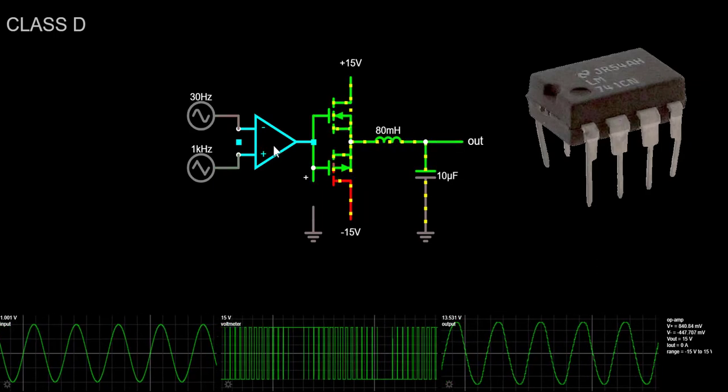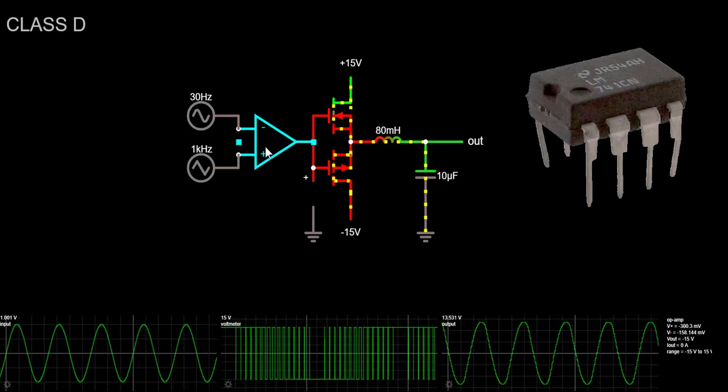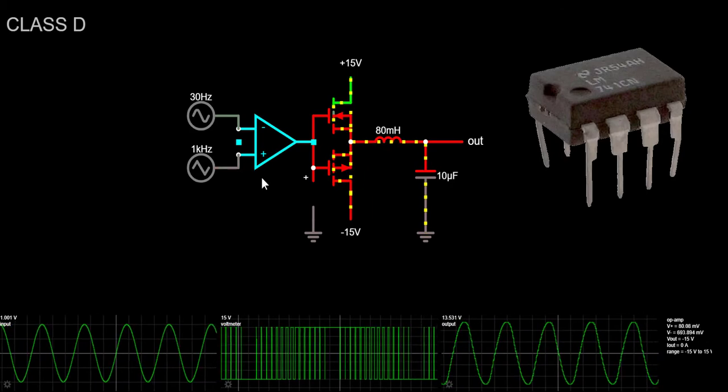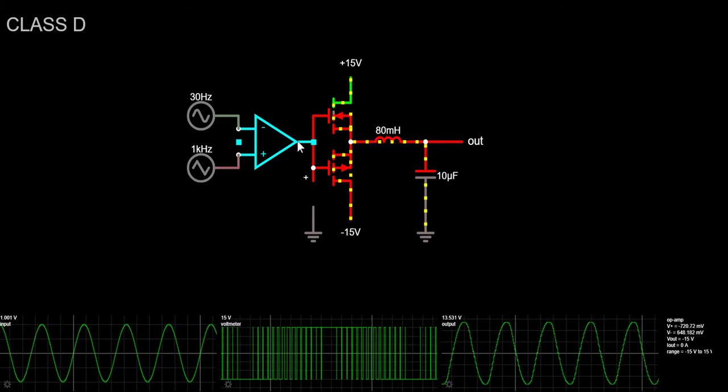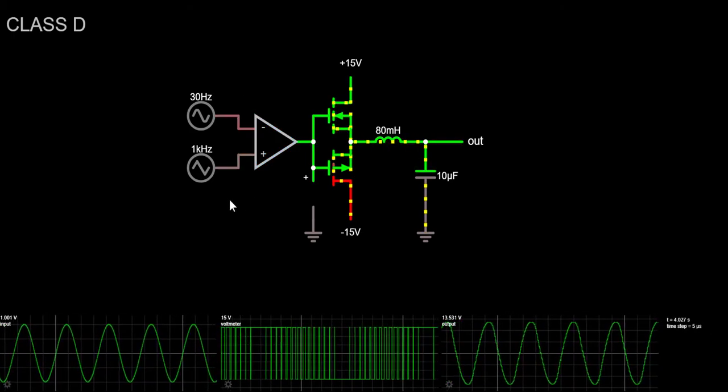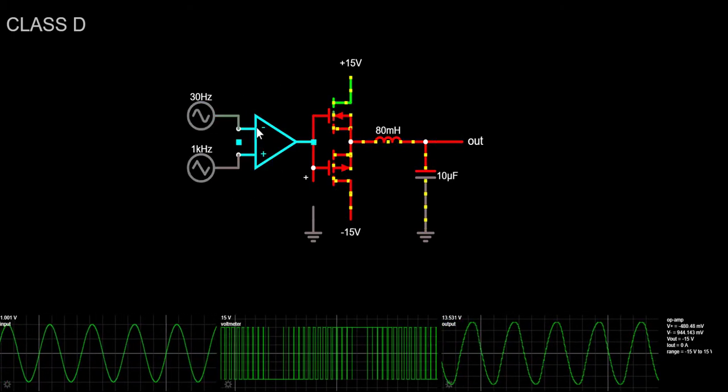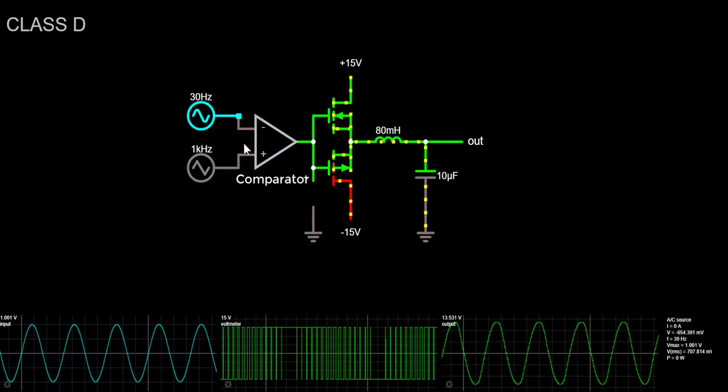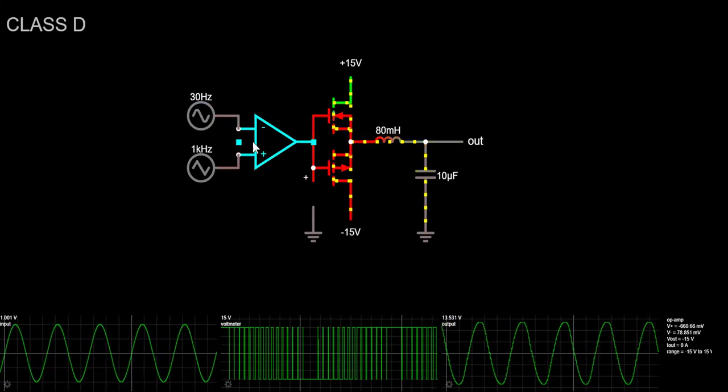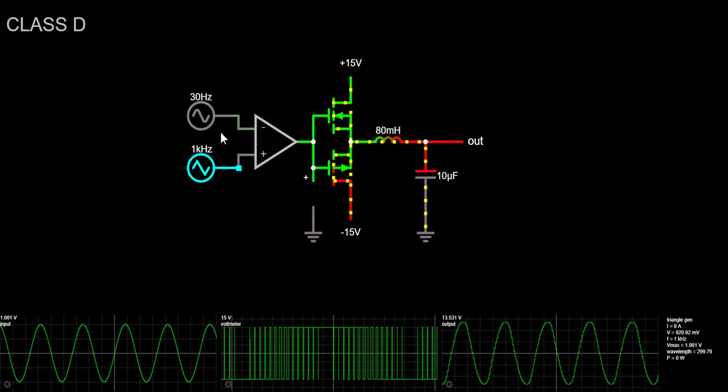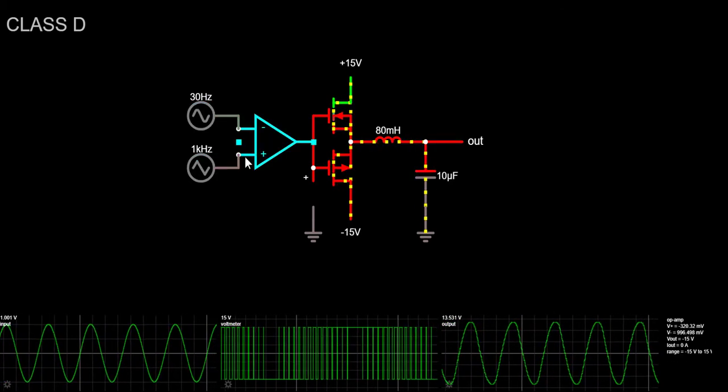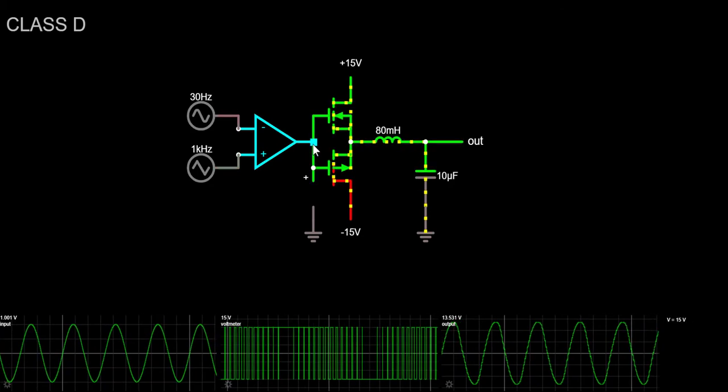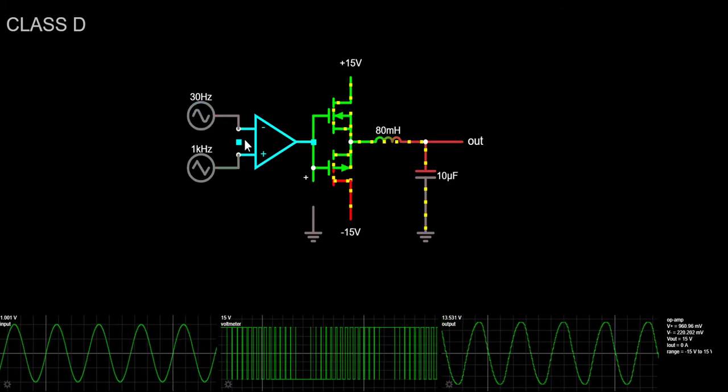It wasn't until they became available as low-cost integrated circuits that it became practical to use them for general purpose applications. In this configuration, without any external components used, this operational amplifier works as a comparator. The operational amplifier comparator compares one analog voltage level with another analog voltage level and produces an output signal based on this voltage comparison.